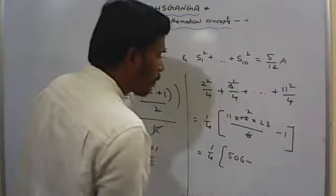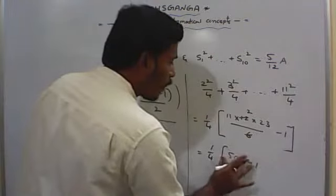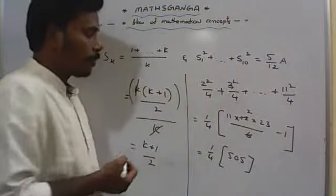So I have that 506 minus 1. 506 minus 1 is 505. So 505/4 it is here.